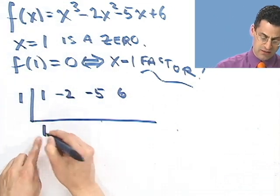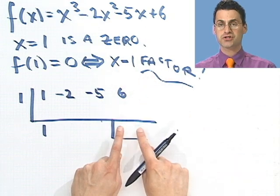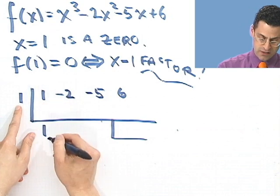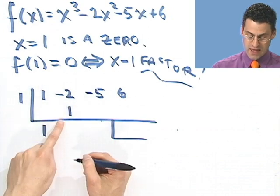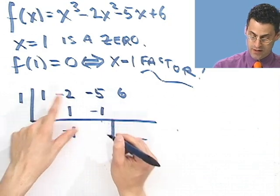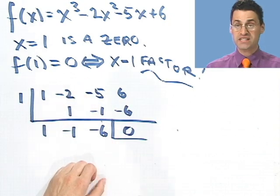And then bring this down and multiply. Now remember, the remainder is going to be here. If this is really a factor, the remainder here should be 0. Let's see if we're OK. 1 times 1, 1, add, minus 1, 1 times minus 1, minus 1, add, minus 6, 1 times minus 6, minus 6, add, 0. Looks great.